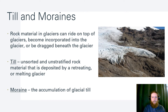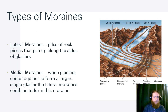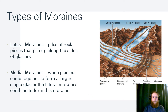Tills and moraines are depositional features of glaciers. Till is unsorted and unstratified rock — all sizes and shapes — deposited by a retreating or melting glacier. A moraine is the accumulation of glacial till. Lateral moraines are pieces of rock that pile up along the sides of the glacier. When glaciers come together, their lateral moraines merge to form medial moraines. By counting medial moraines, you can tell how many tributary glaciers have joined a larger glacier.